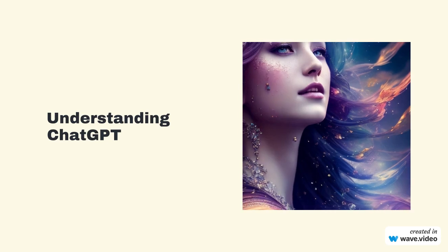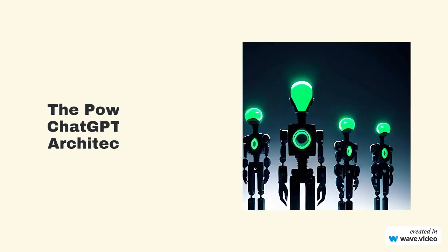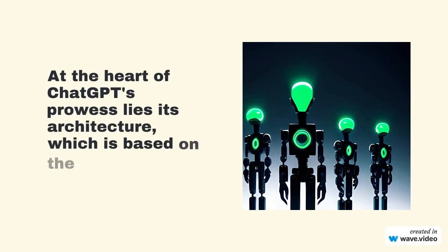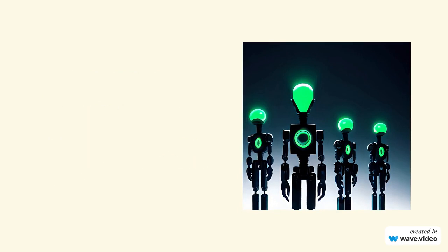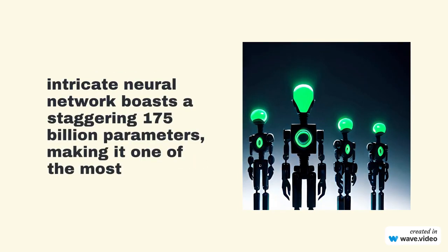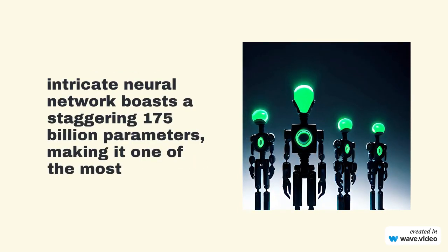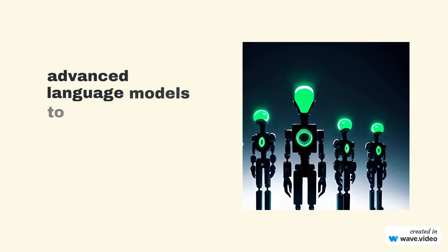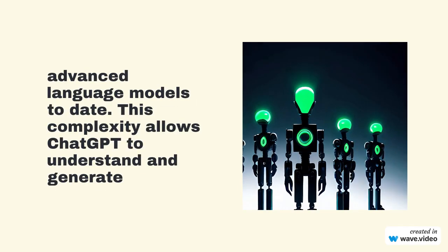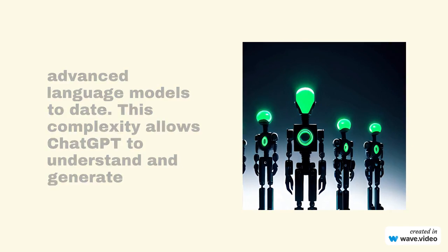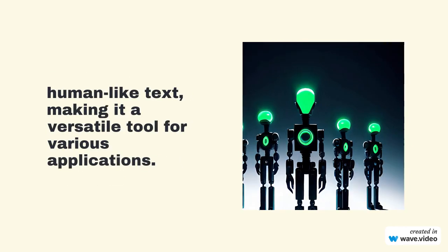Understanding ChatGPT: the power of ChatGPT's architecture. At the heart of ChatGPT's prowess lies its architecture, which is based on the GPT 3.5 model. This intricate neural network boasts a staggering 175 billion parameters, making it one of the most advanced language models to date. This complexity allows ChatGPT to understand and generate human-like text, making it a versatile tool for various applications.